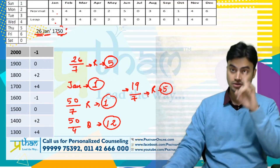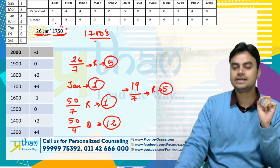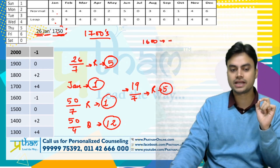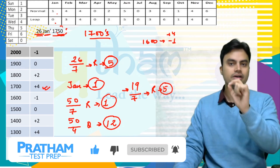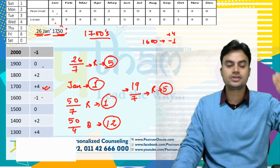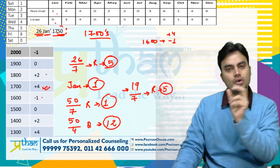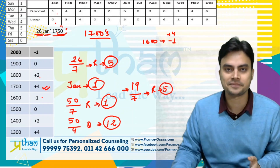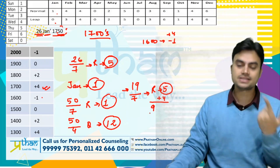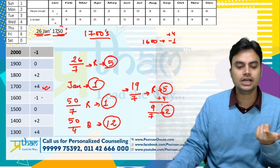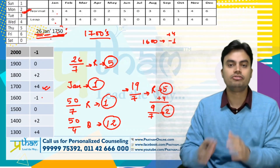Toh kya 5 mera answer hai? Nahi — if you remember Part 2, century series bhi add karni hai. 1750 hai, toh 1700 ka series hai. 1600 ke liye minus 1 karte hai, ek upar jayenge toh plus 4 karenge. 1700 series ke liye plus 4. So 5 plus 4 is 9, 9 divided by 7 remainder is 2, which means Monday. So 26th January 1750 was Monday. If you practice, you can solve this question in 5–10 seconds.